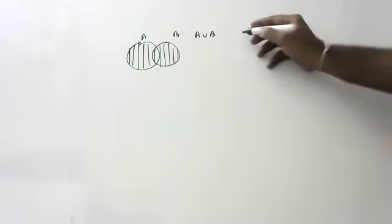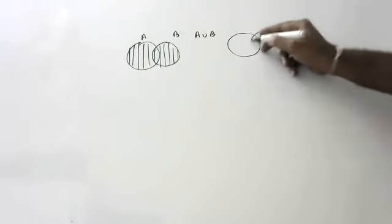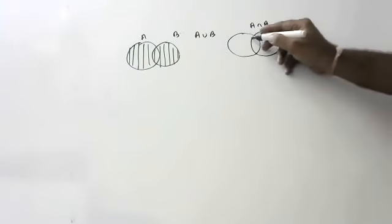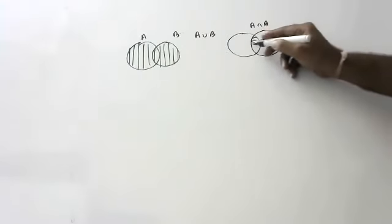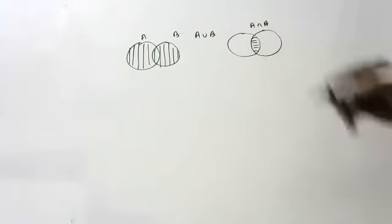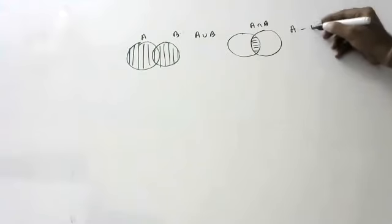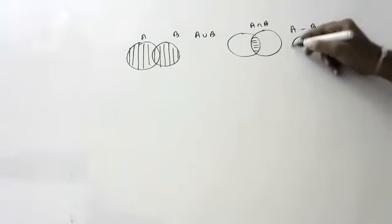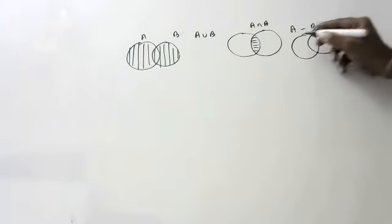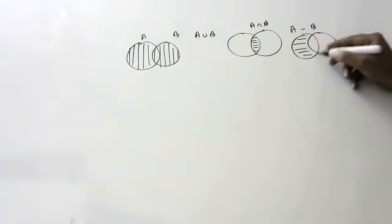If someone asks you to shade A intersection B, what will you shade? Only the common part. If someone asks you to shade A minus B, what will you shade? Only A — that is what you will shade.